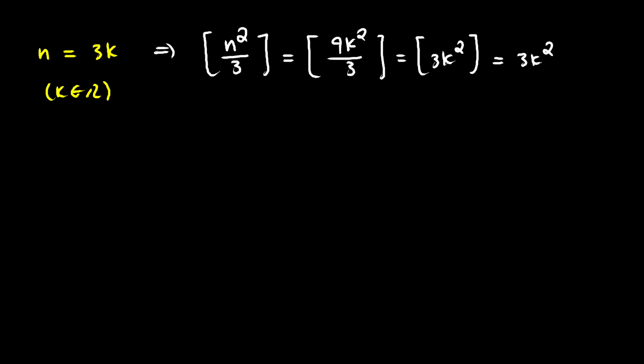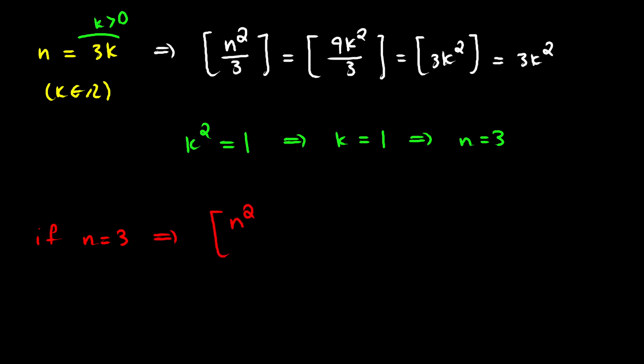We want 3k² to be prime, so k² must equal 1 — otherwise our number would be composite. Since n is a natural number, k must be positive, so k equals 1, which means n equals 3. Testing this: the floor of 9 divided by 3 equals the floor of 3, which equals 3, and 3 is prime. Therefore n equals 3 is a valid solution.